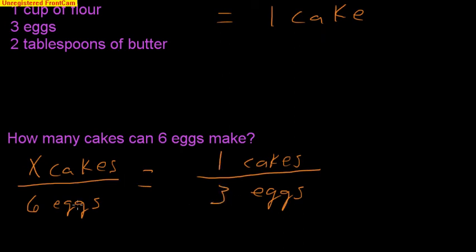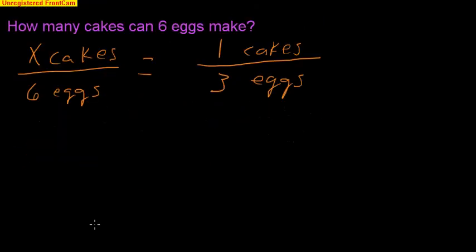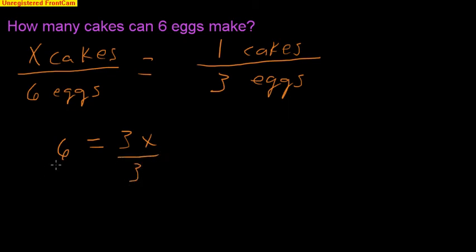Now once you've set up your proportion, all you have to do is cross-multiply and divide. Cross-multiplying: take this 6 and multiply by 1, which gives you 6. Then 3 times x is 3x. Now I want to get x by itself, so I'm going to divide both sides by 3, so x is going to be equal to 2.